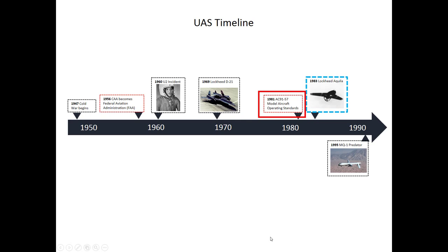We will look at the FAA's Advisory Circular 91-57, model aircraft operating standards, later when we discuss regulatory issues. Notice that Advisory Circular 91-57 was first published in 1981 and provided guidelines to the hobbyist community on model aircraft operations. During the Vietnam conflict, the U.S. Army needed a small battlefield drone that could act as a target designator. One of the systems to emerge from this need was the Lockheed Aquila. The first flight of the Aquila occurred in 1983. The program was plagued by numerous development issues and was canceled in 1987 after one billion dollars was spent on the program.